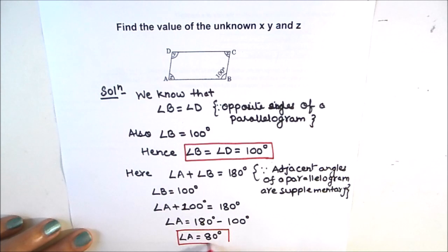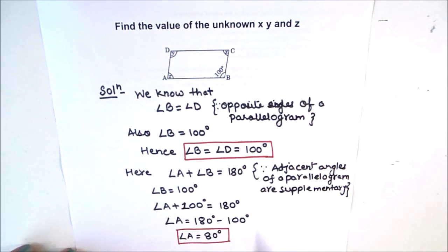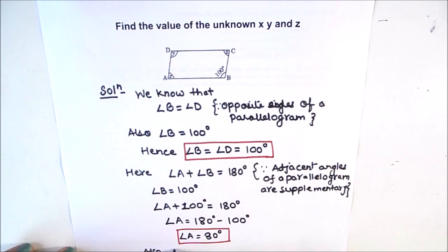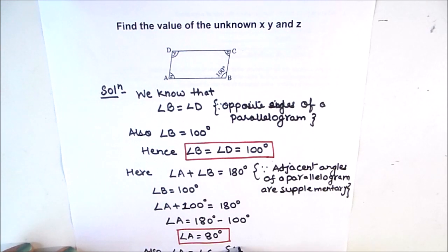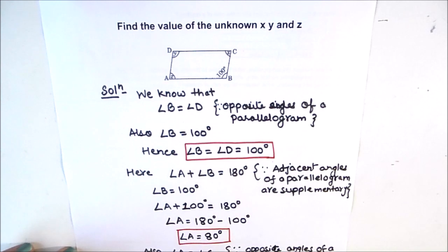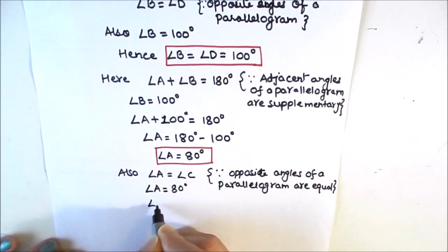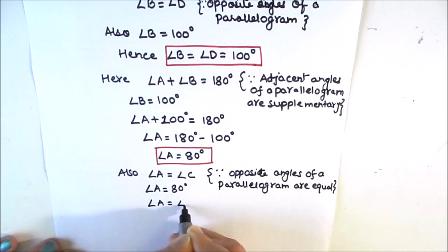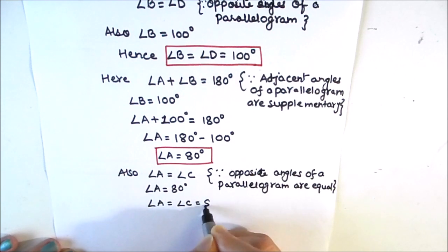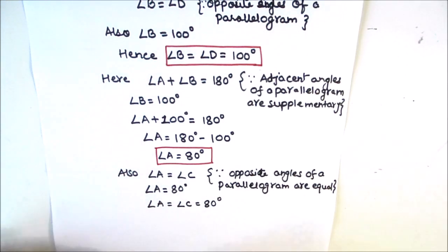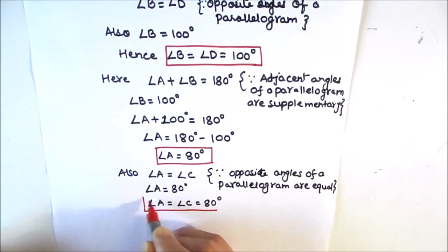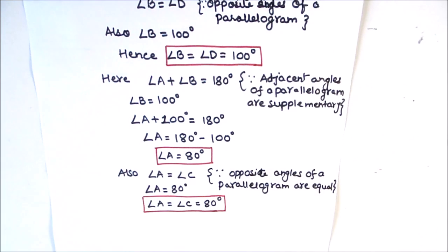Now we need to find the value of angle C. We know that angle A is equal to angle C, since opposite angles of a parallelogram are equal. So angle A equals angle C equals 80 degrees. We got the value of angle C as 80 degrees.